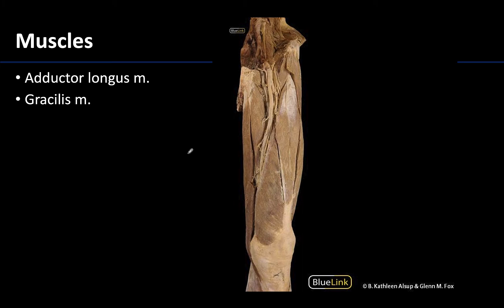We are looking at an anterior view of the thigh that has been rotated just a little medially, so all the muscles over here are going to be part of the anterior compartment of the thigh. Right here you have the femoral neurovasculature, and that leaves over in this region the medial or adductor compartment.